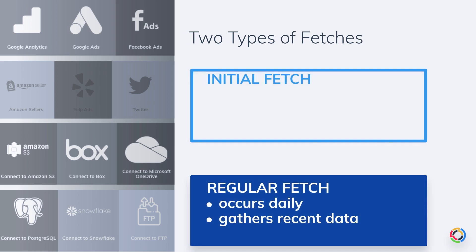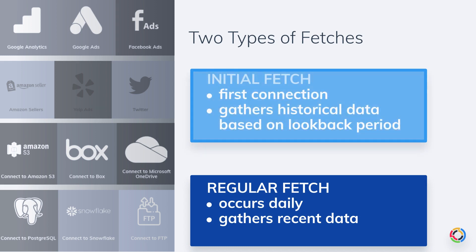The other type is referred to as a regular fetch. Regular fetches happen on a daily basis, and obviously after the initial fetch. While both of these fetch types will occur, it's important to note that the history of the data is different for each one. During the initial fetch, there's generally a longer history of data that's gathered, and a regular fetch gathers more recent data.